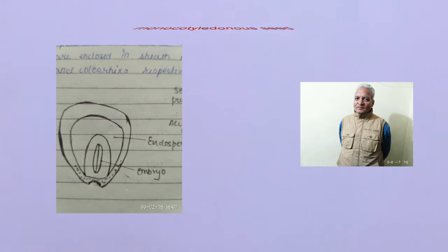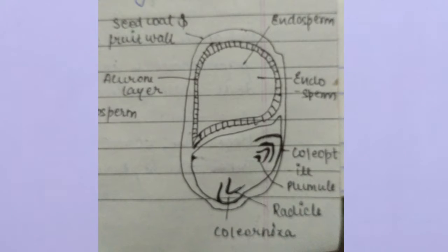Endosperm is bulky and stores food. The outer covering of endosperm separates the embryo by aleurone layer. It consists of one large shield-shaped cotyledon, i.e. scutellum, and a short axis with plumule and radicle. The plumule and radicle are enclosed in sheaths which are called coleoptile and coleorhiza respectively.